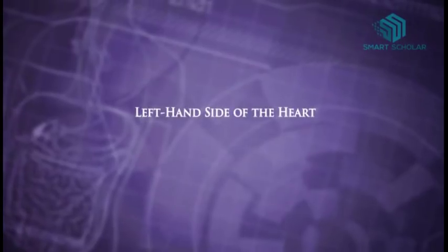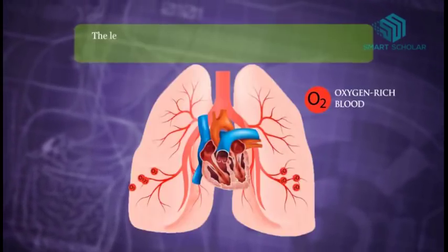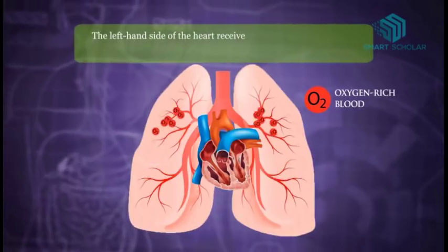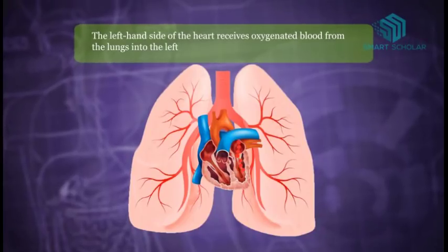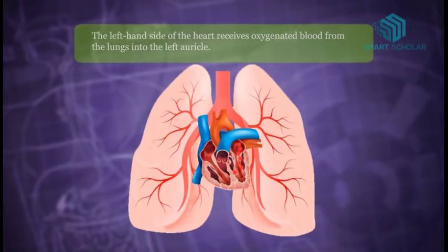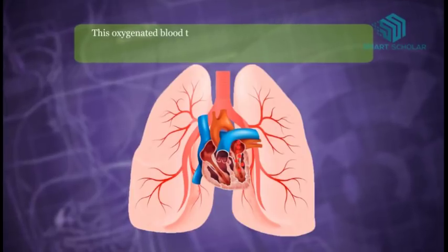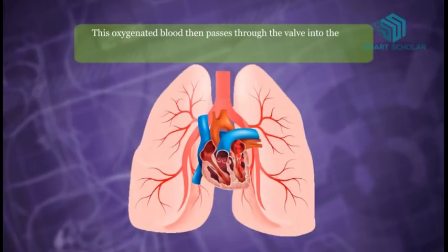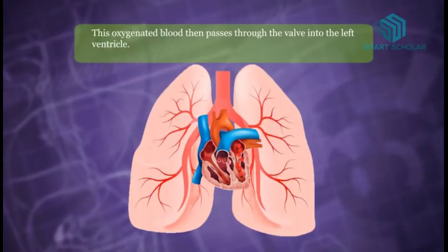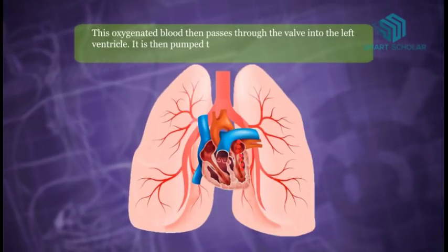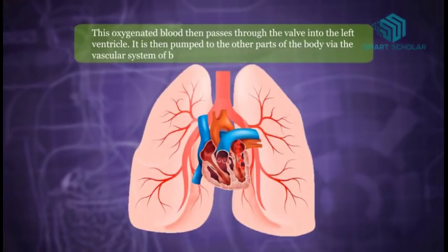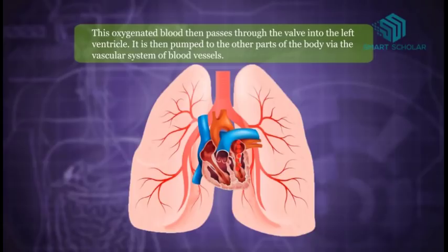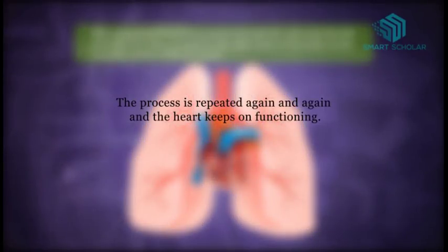The left hand side of the heart receives oxygenated blood from the lungs into the left atrium. This oxygenated blood then passes through the valve into the left ventricle. It is then pumped to the other parts of the body via the vascular system of blood vessels. The process is repeated again and again, and the heart keeps on functioning.